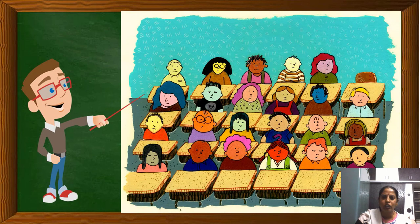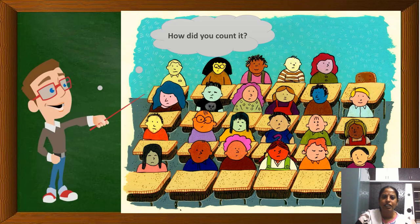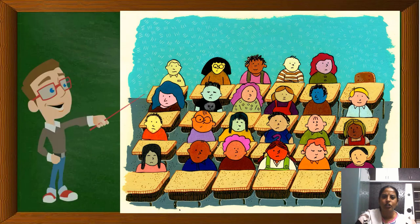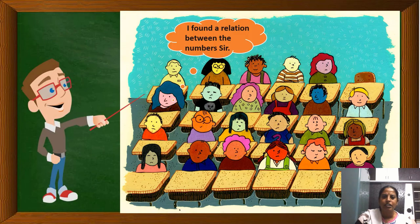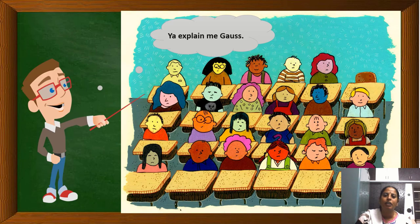The teacher told Gauss: you are joking. You said any number by luck, didn't you? Gauss replied to his teacher: No sir, I didn't. Then the teacher asked Gauss: how did you count it? Gauss replied that he found a relation between the numbers. The teacher said: Oh, explain to me, Gauss.